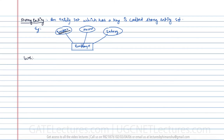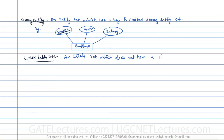The next one is the weak entity set. A weak entity set can be defined as an entity set which does not have a key attribute. Such an entity set is called a weak entity set.